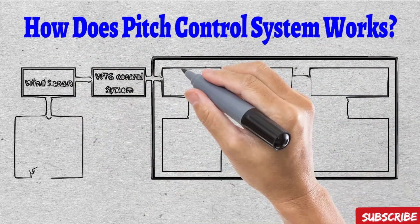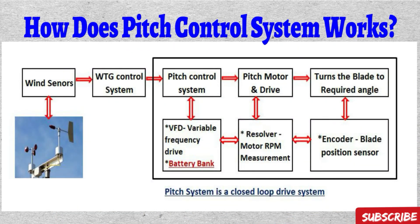The pitch system is a closed-loop drive system and mainly depends on wind sensors — anemometers and wind vanes. The wind sensor gives actual values to the WTG main control system. The main controller calculates the actual blade angle and sends angle commands to the pitch controller. The pitch controller has a VFD (variable frequency drive) and a battery bank, which plays an important role. The pitch controller gives supply to the pitch motor to set the required blade angle. The pitch motor has a resolver to measure RPM, and an encoder in the hub unit measures blade angle position for each blade.